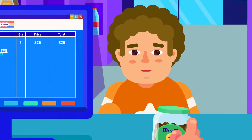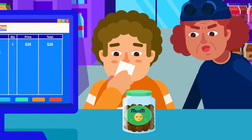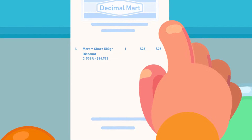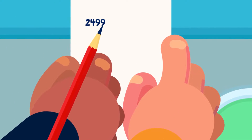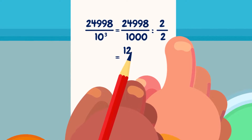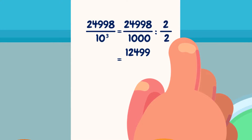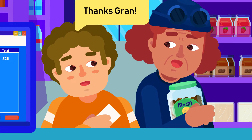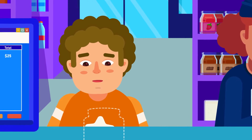The fraction in the answer can further be simplified by dividing both the numerator and the denominator by a common divisor. In this problem, the common divisor is 2. When 24998 is divided by 2, we get 12499. When the denominator, 1000, is divided by 2, we get 500. Since these numbers cannot be commonly divided further, this is the simplest fraction.